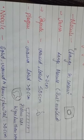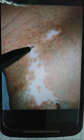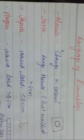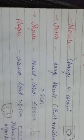Macule is a change in colour on the skin — you can see a part of skin showing a change in colour, and that is a macule. A patch is a large macule — it is also a change in colour but it is more than 2 centimetres. So macule is a small change in colour, while patch is a large change in colour, more than 2 centimetres.